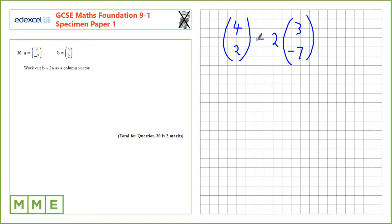So, 4 take 2 times 3. 2 times 3 is 6. 4 take away 6, minus 2.